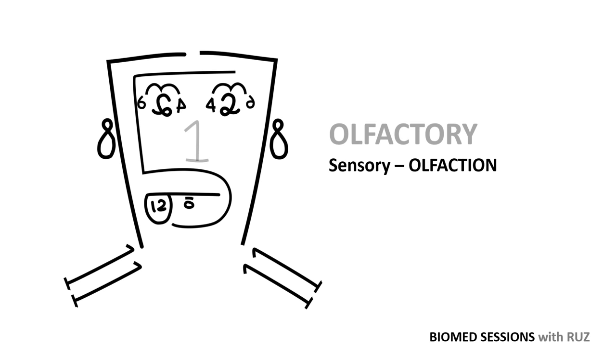Cranial nerve 1 is the olfactory nerve. It is sensory, therefore relays information back to the brain. In this case, this will be in relation to olfaction, which is basically just your sense of smell. Handy, because the number 1 is the nose in the diagram.